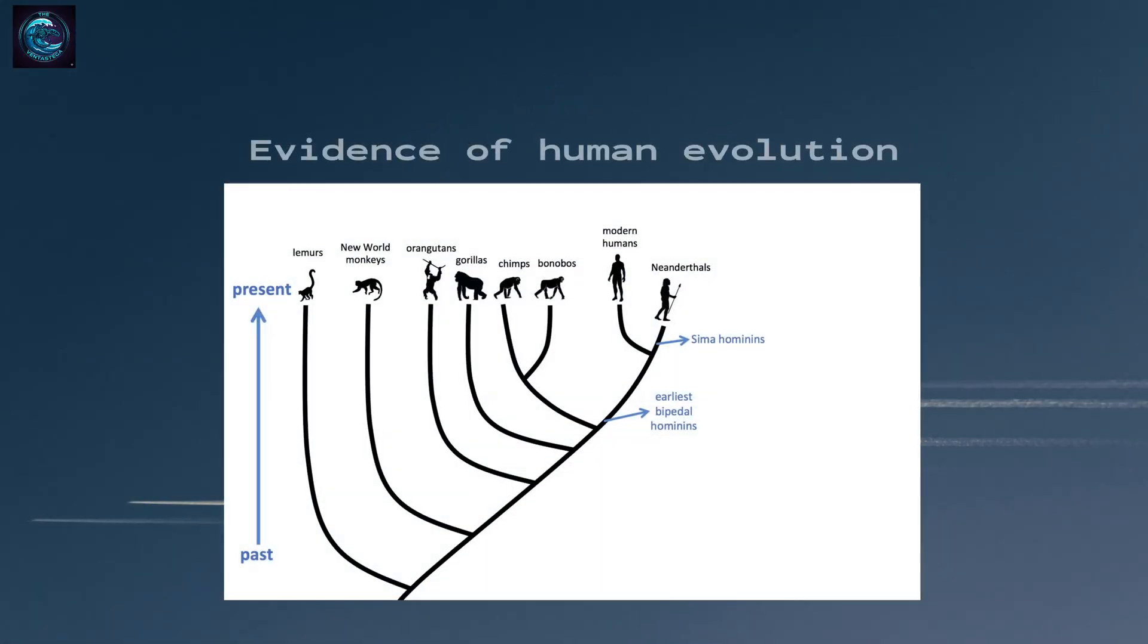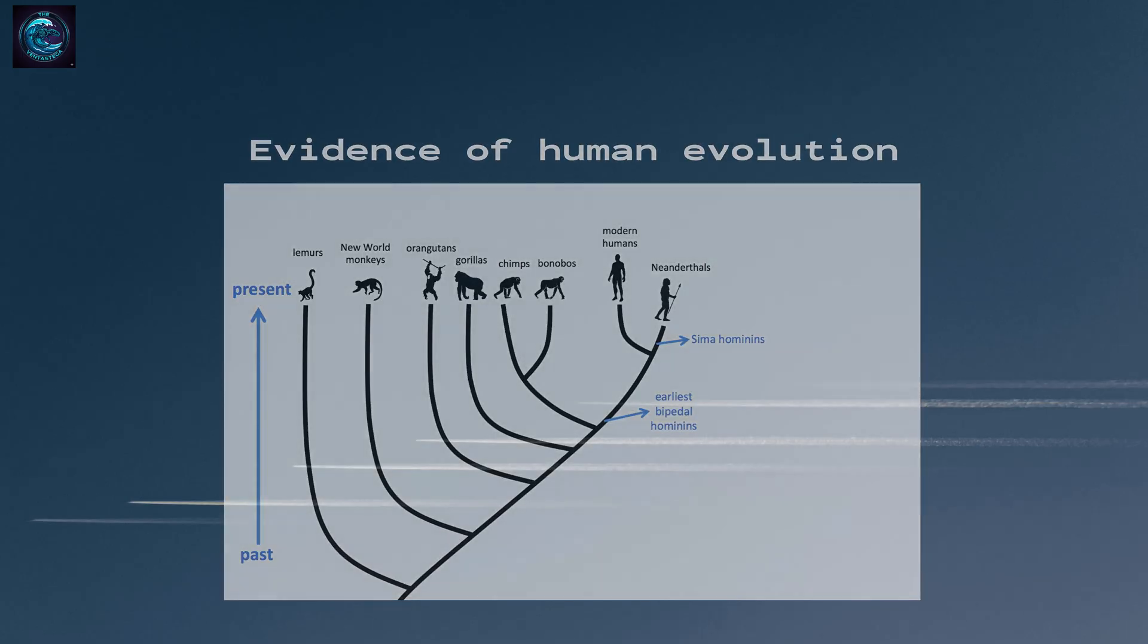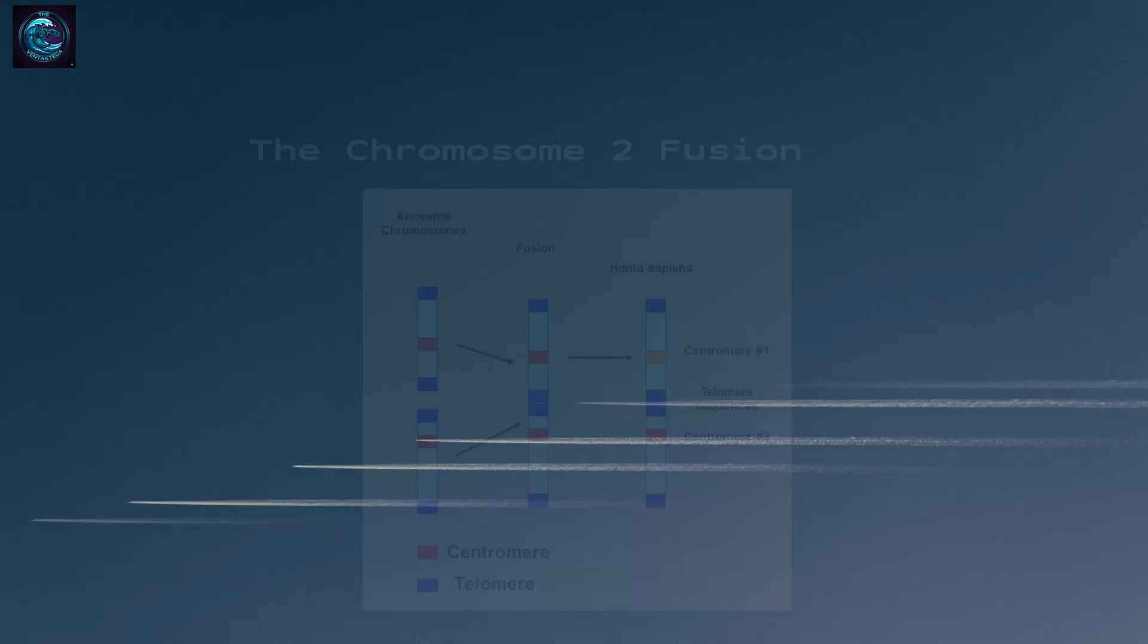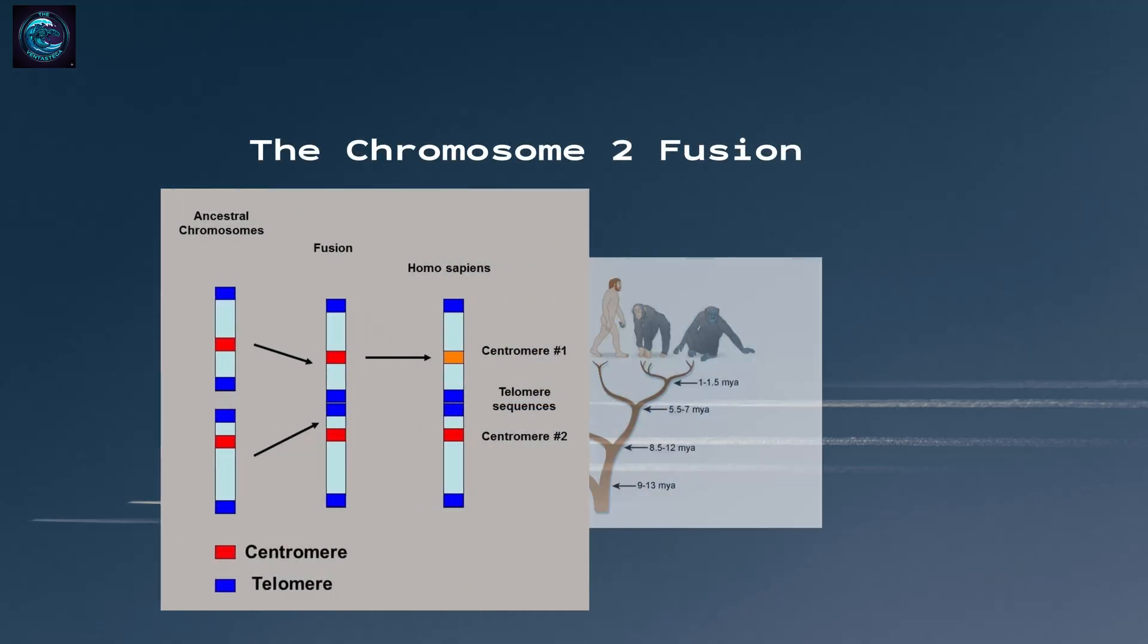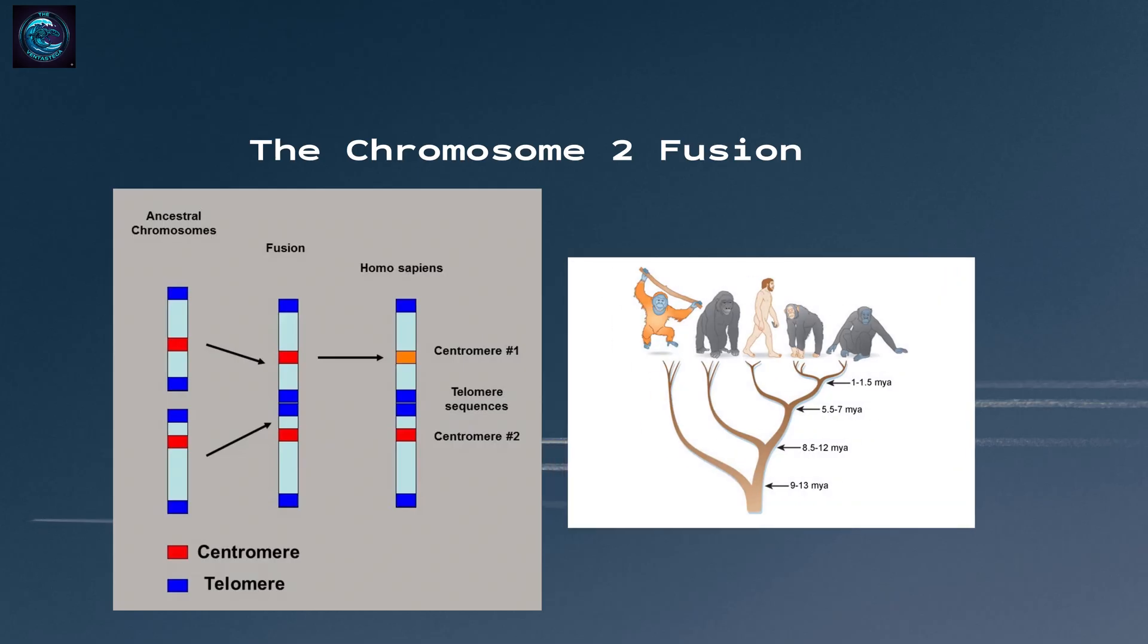Hello, everyone. In the world of evolutionary biology, some evidence is so compelling, so undeniable, that it's been called a smoking gun. Today, we're going to explore one of the most powerful pieces of evidence for human evolution, the fusion of chromosome 2. By the end of this video, you'll understand why this single chromosome tells an extraordinary story about our shared ancestry with great apes.